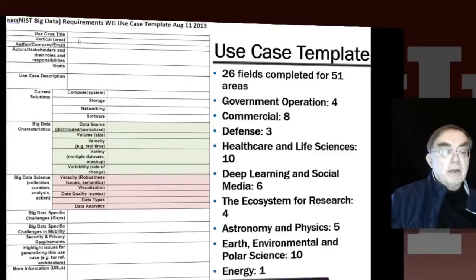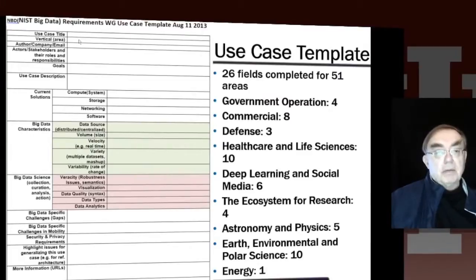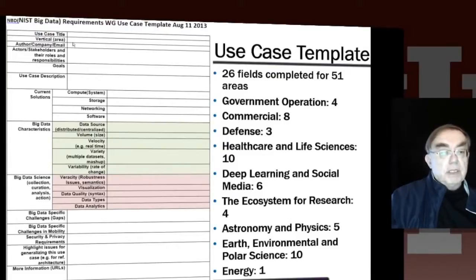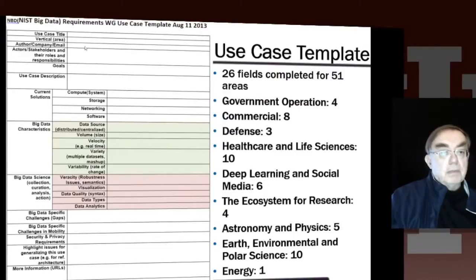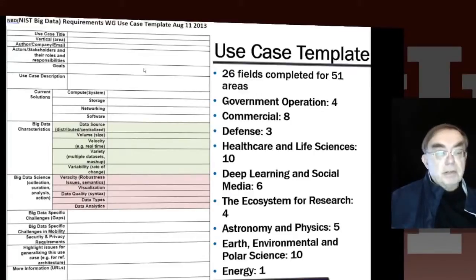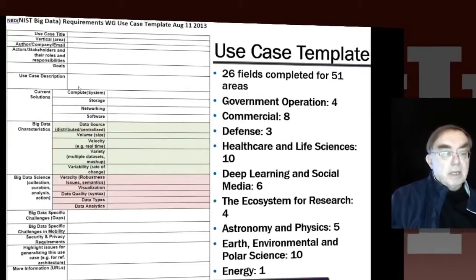The template includes the title, the area where the use case lives — military, retail, or artificial intelligence — the people building the use case definition, which may or may not be the same people who execute it, the people involved as users, developers, and supporters of the use case, the goals of the use case, such as finding fundamental scientific results, and a description of how those results were obtained. Then we come into some of the technical details.